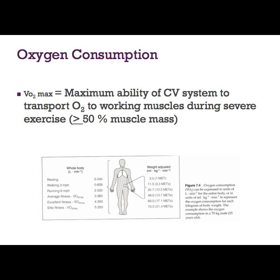This chart shows absolute VO2 for different activity types, measured in liters per minute on the left-hand side, looking at resting, walking at 3 mph, running at 6 mph, and average, excellent, and elite fitness levels. When we adjust for weight, resting shows 3.5 milliliters per kilogram per minute, equivalent to 1 MET. Average fitness is approximately 48 milliliters per kilogram per minute, or about 13.7 METs.